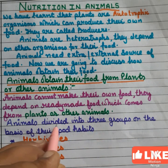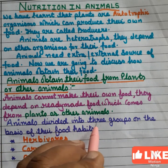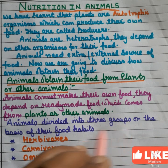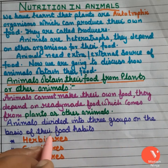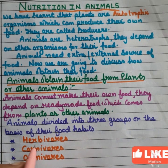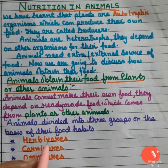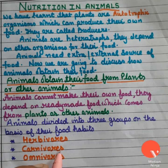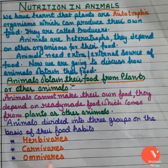Animals are divided into three groups on the basis of their food habits. First, herbivores. Second, carnivores. Third, omnivores.